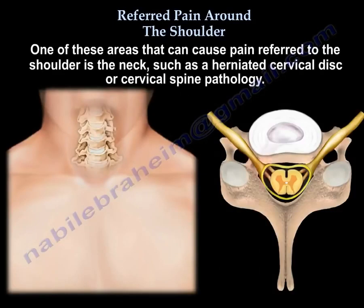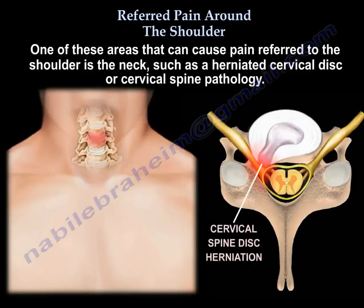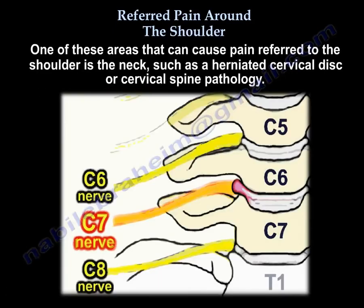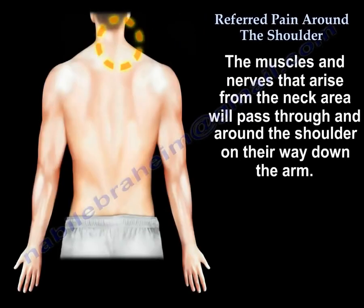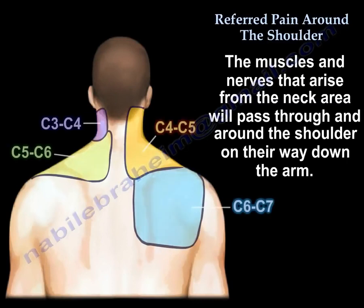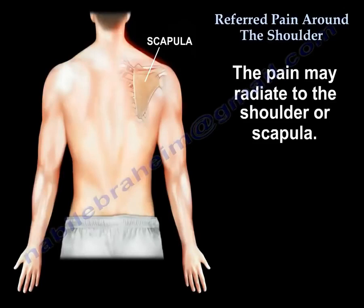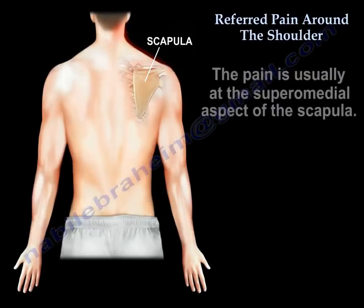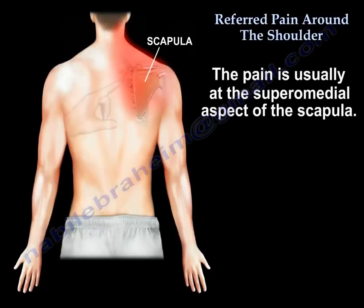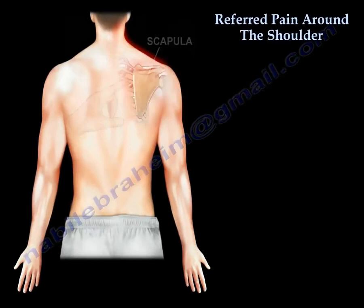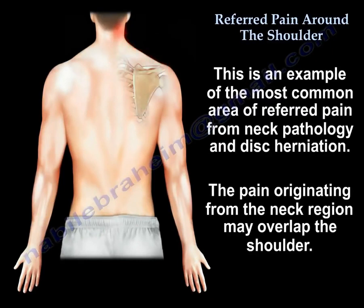One area that can cause pain referred to the shoulder is the neck, such as a herniated cervical disc or cervical spine pathology. The muscles and nerves that arise from the neck area pass through and around the shoulder on their way down the arm, and the pain may radiate down to the shoulder or the scapula. The pain is usually at the superior medial aspect of the scapula — the most common area of referred pain from neck pathology and disc herniation.